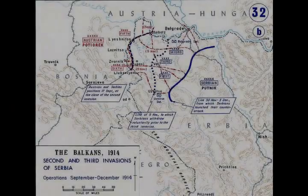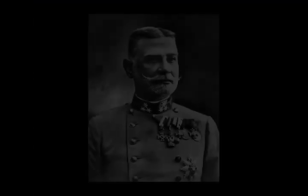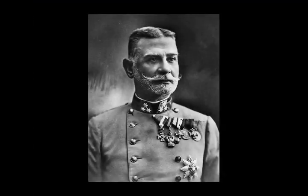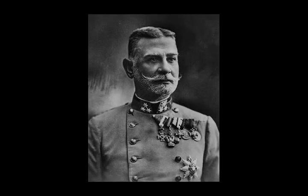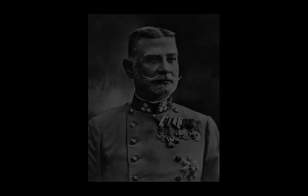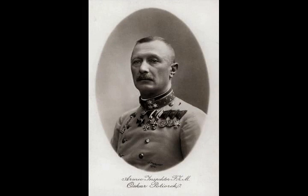The Battle of Kolubara was a campaign fought between Austria-Hungary and Serbia in November and December 1914, during the Serbian campaign of World War I. It commenced on 16 November, when the Austro-Hungarians under the command of Oskar Potiorek reached the Kolubara River during their third invasion of Serbia that year, having captured the strategic town of Valjevo and forced the Serbian army to undertake a series of retreats.